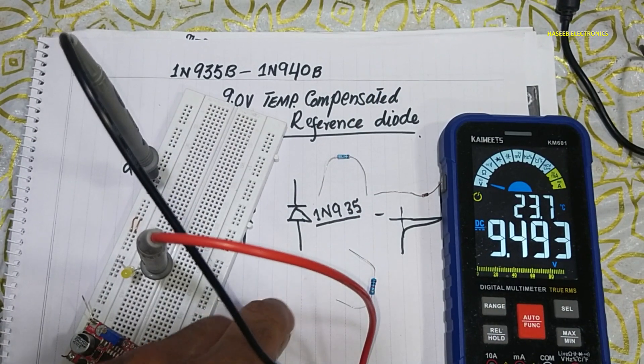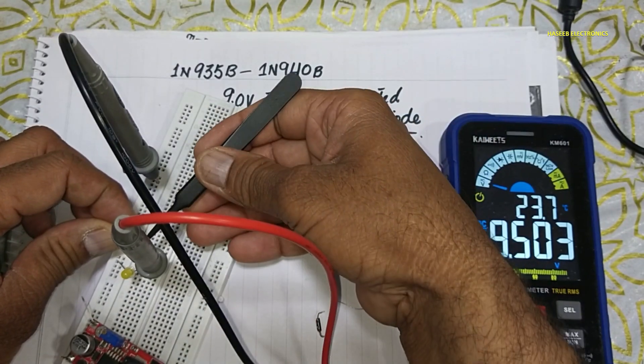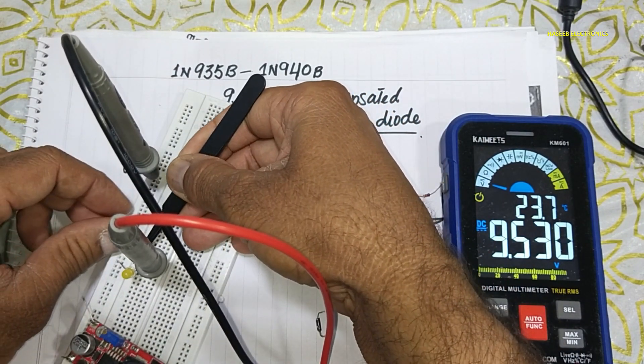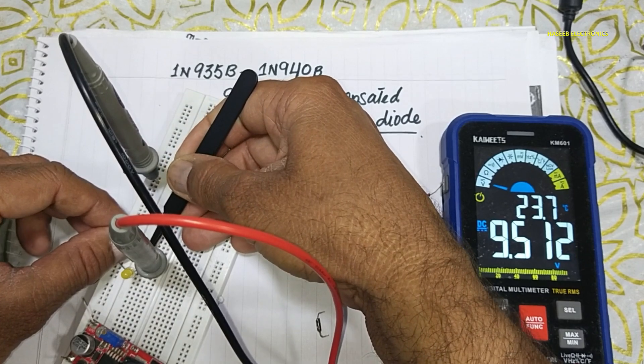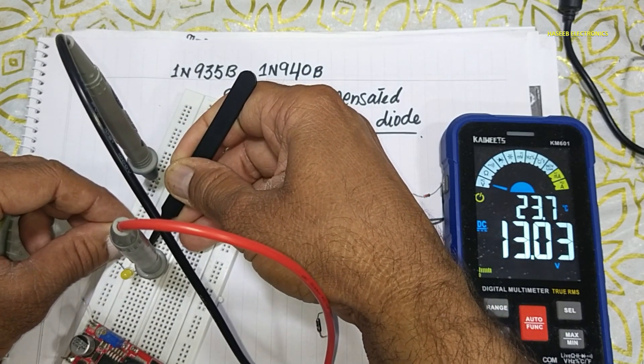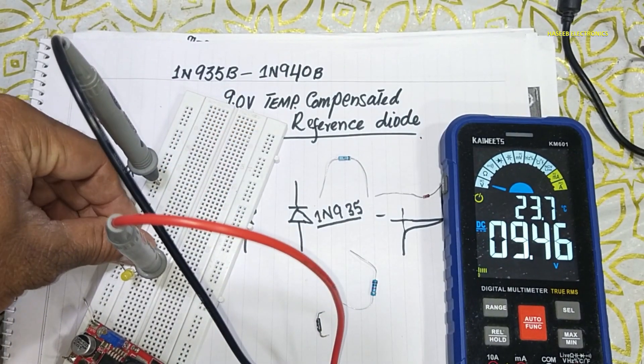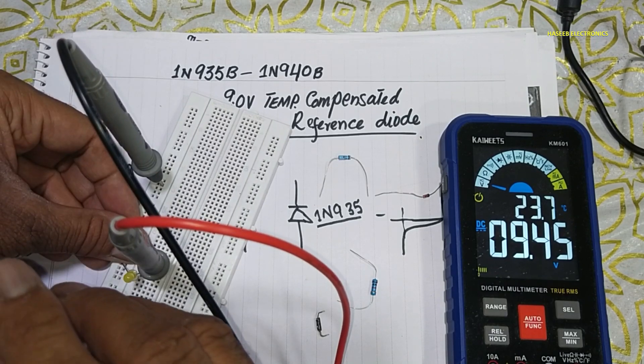And it will drop all the voltage across it. Now I will increase the voltage. We can see in reverse region it is dropping all the voltage across it.